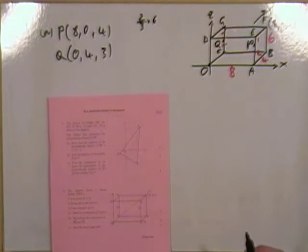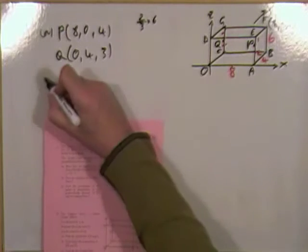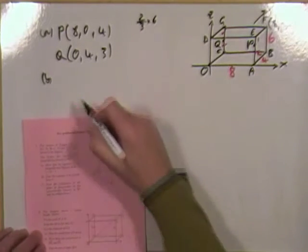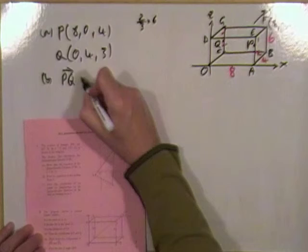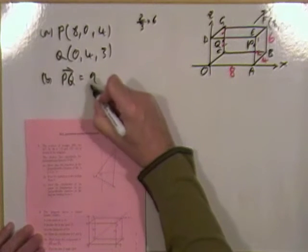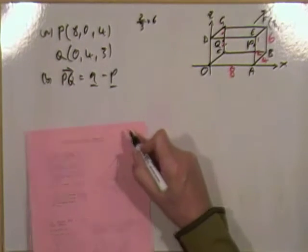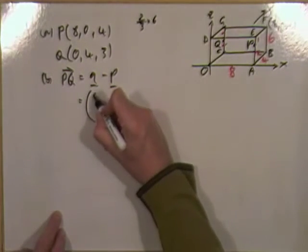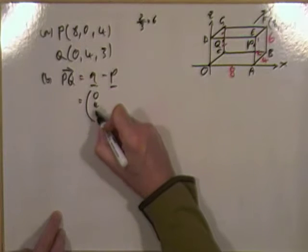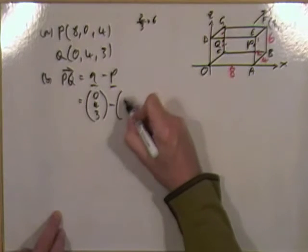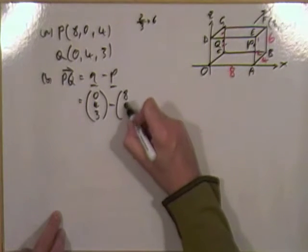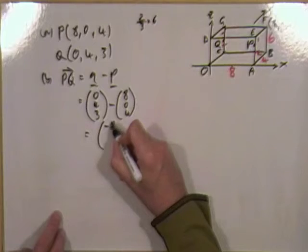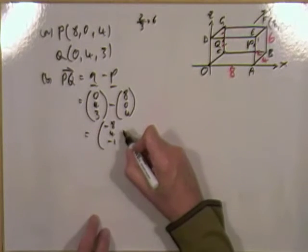That was a couple of marks. Next — part B: write down the components of PQ. That'll just be Q minus P. So Q is 0, 4, 3 minus P which is 8, 0, 4 — giving negative 8, 4, negative 1.